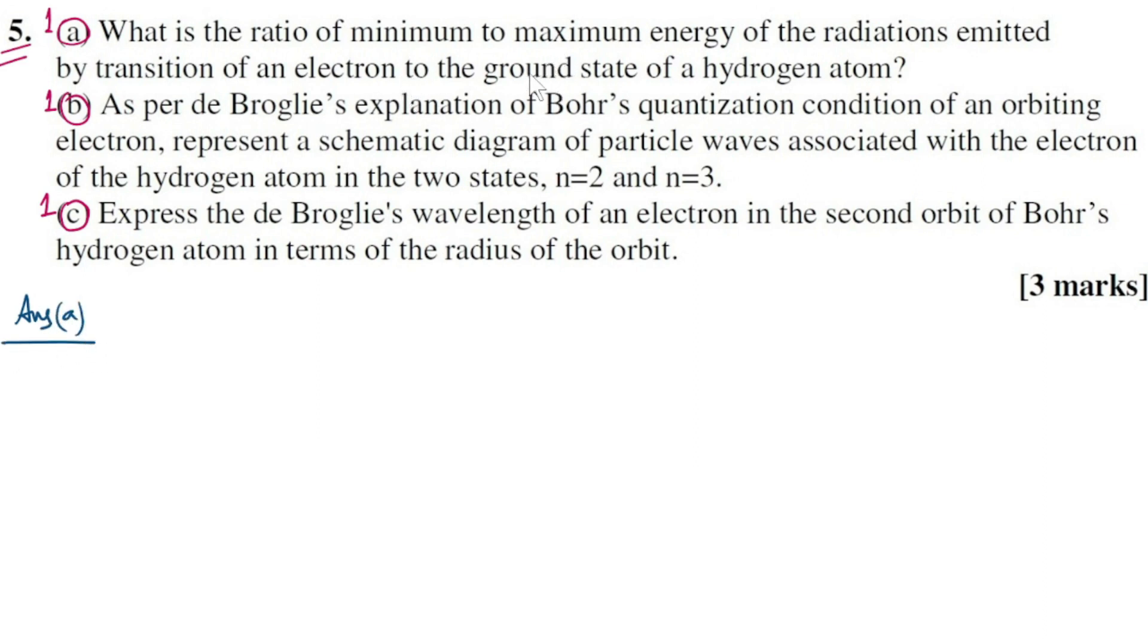Hope you have read this question. Energy of electron in the nth allowed orbit: En equals minus 13.6 upon n squared electron volts. It implies that E1 equals minus 13.6 by 1 squared equals minus 13.6 electron volts. E2 equals minus 13.6 divided by 2 squared equals minus 3.4 electron volts.